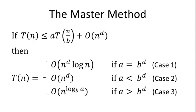Given a recurrence in this permitted format, the running time is given by one of three formulas depending on the relationship between A, the number of recursive calls, and B raised to the D power. Case one is when A equals B to the D — then the running time is O(N^D · log N). In case two, A is strictly smaller than B to the D, giving O(N^D). And when A is bigger than B to the D, we get O(N^(log_B A)). We'll understand where that formula comes from a little later.